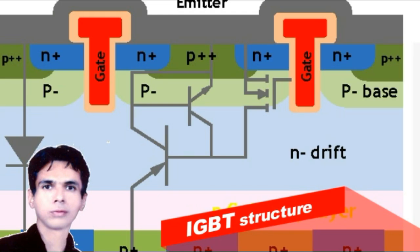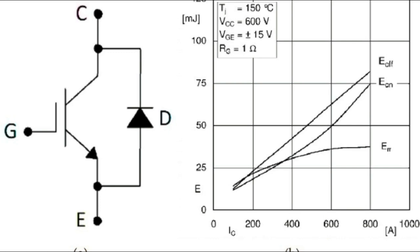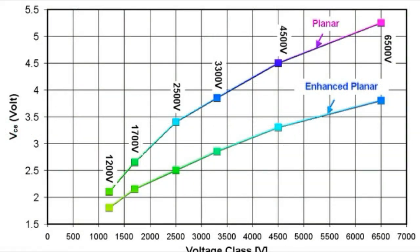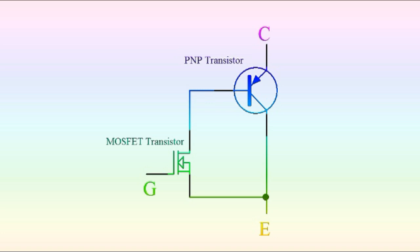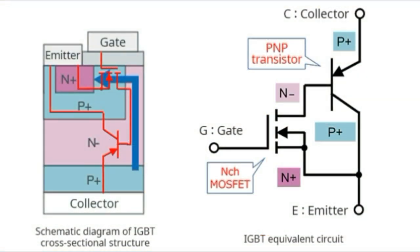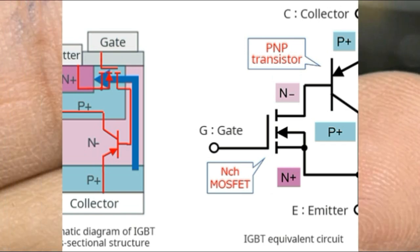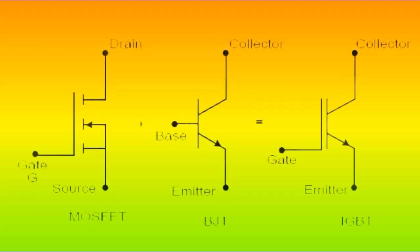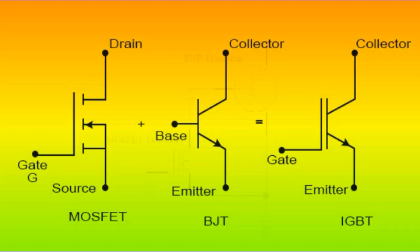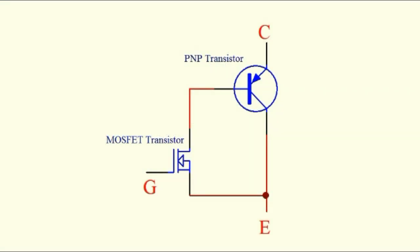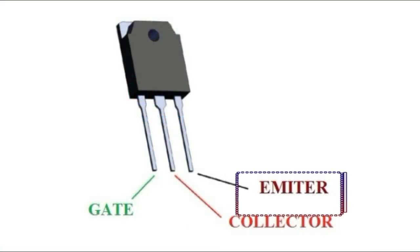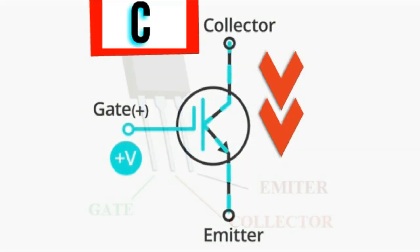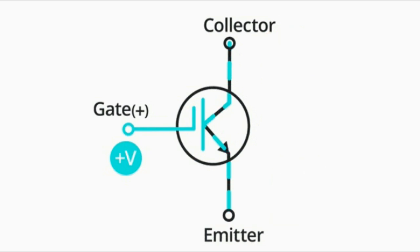The Insulated Gate Bipolar Transistor has more power than a standard bipolar transistor and has the ability to work at higher voltage with lower input losses. From a functional point of view, the IGBT is a FET combined with a bipolar transistor to form a Darlington configuration. It is a three-pin device made by combining an N-channel MOSFET with an isolated gate at the input and a PNP bipolar transistor at the output, forming a Darlington circuit. The terminals of the IGBT are called collector, emitter, and gate. The C and E terminals correspond to the conduction path through which current passes, while the G pin controls the device.